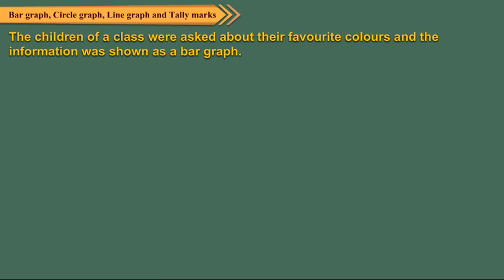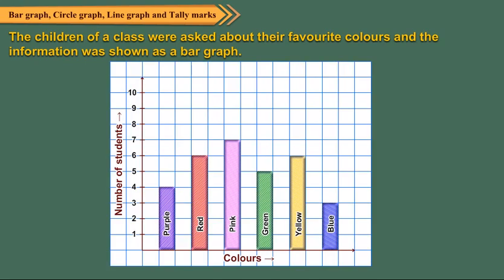Consider the following example. The children of a class were asked about their favorite colors and the information was shown as a bar graph. The bar for the pink color is tallest, meaning pink color is liked by most of the students. Also the bar for blue color is shortest, so blue color is liked by least number of students. The bars for red and yellow colors are of equal height, so these two colors are liked by equal number of students.